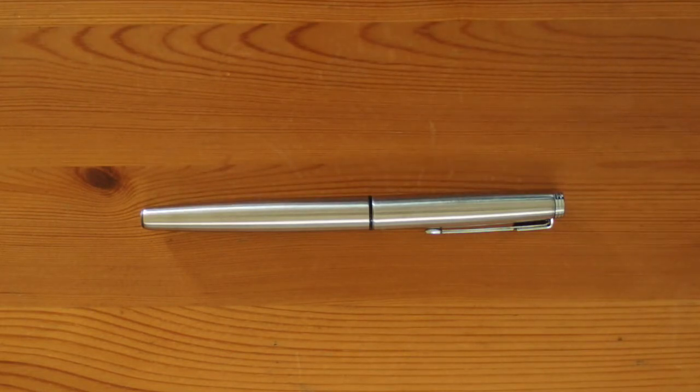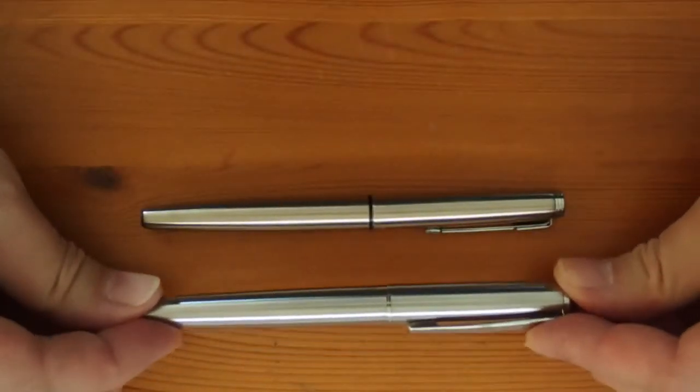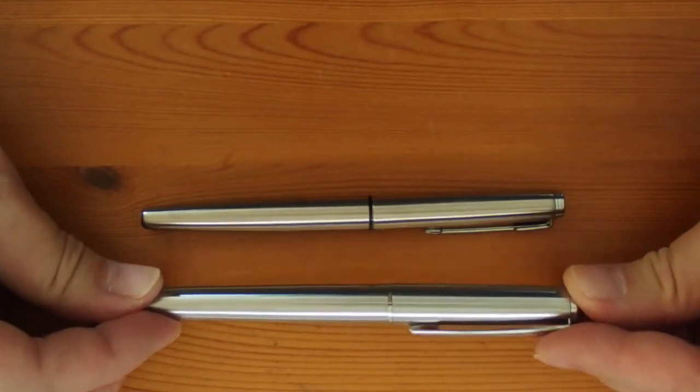When capped, you can see it's nicely shaped and proportioned, with cap and barrel made out of brushed stainless steel. Compared to some other similar pens like this Rockman 103, the steel has a warm tint to it, and I quite like that.